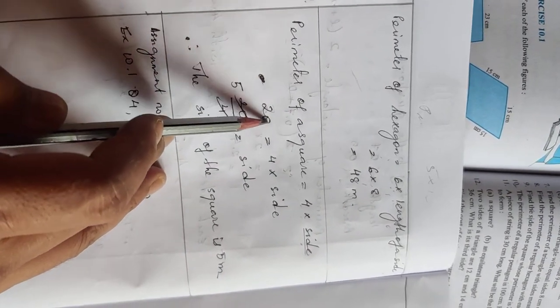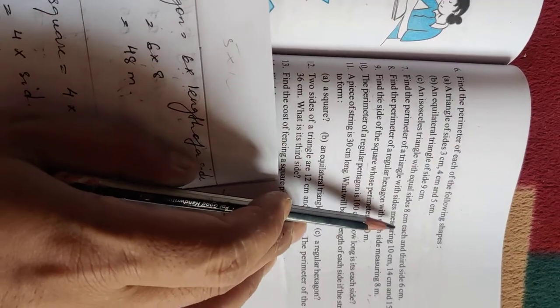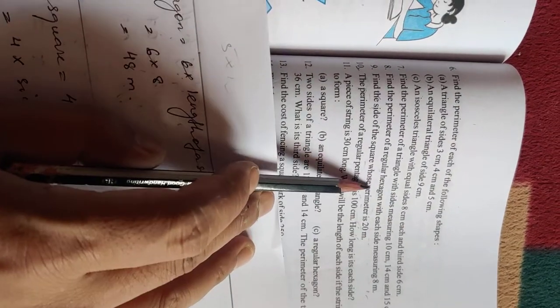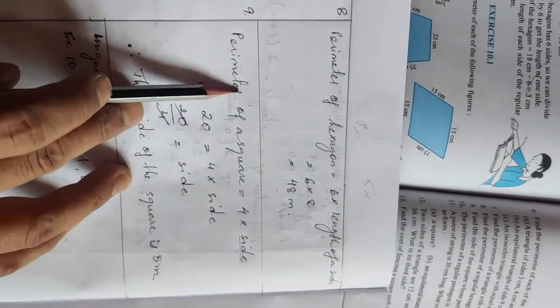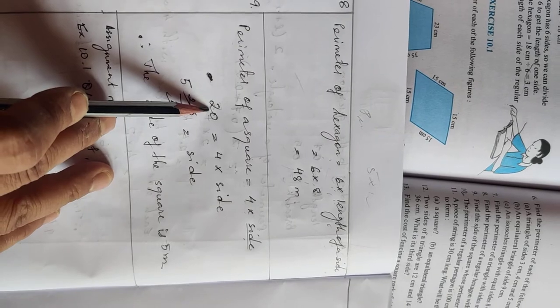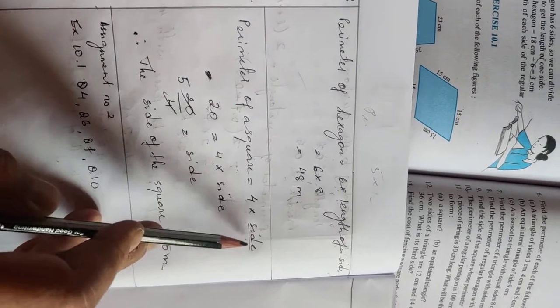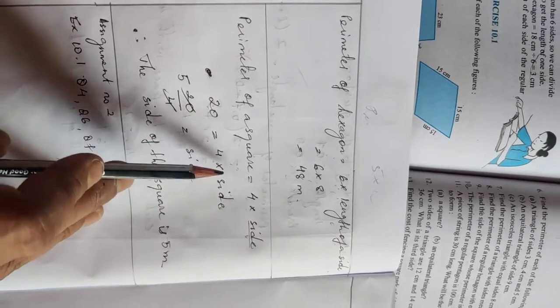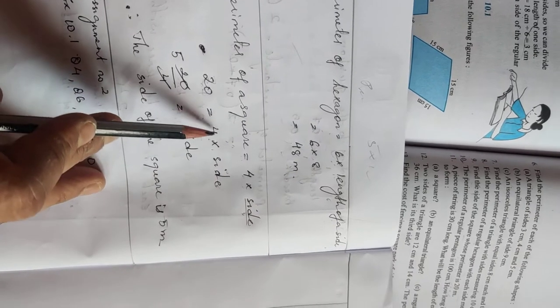The perimeter is 20, so 20 is equal to 4 times side. From this equation we need to find the side by moving the 4 to the other side.